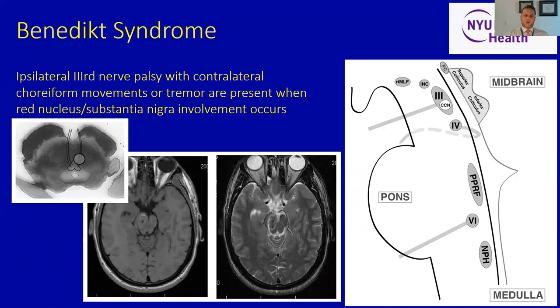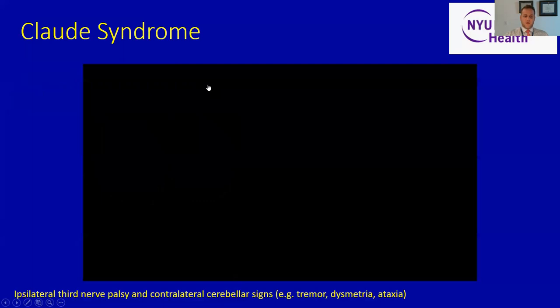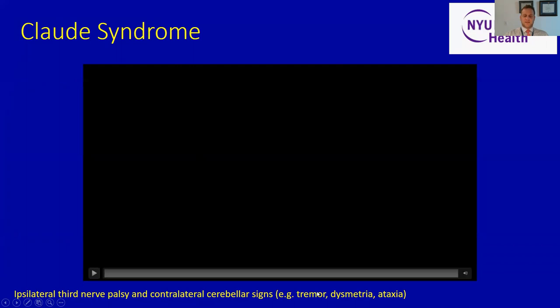Here's our diagram of the lateral aspects of the brainstem showing localization of where a fascicular third/red nucleus lesion would occur. Claude syndrome manifests when there's a nuclear third nerve palsy along with ataxia and confusion, involving the superior cerebellar peduncle, red nucleus, and the MLF. Here's a video of someone who has a third nerve palsy on one side and contralateral cerebellar signs: tremor, dysmetria, and ataxia.